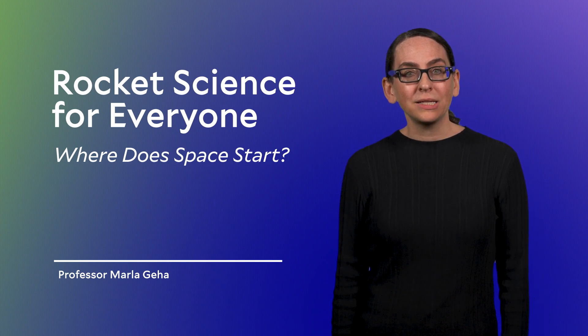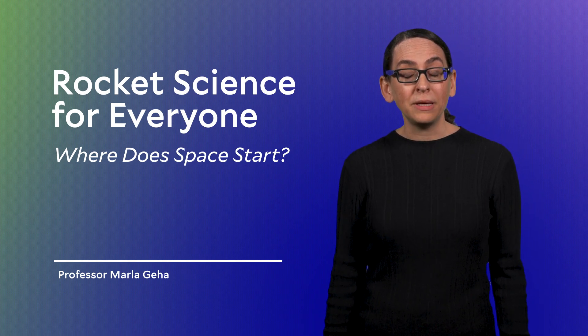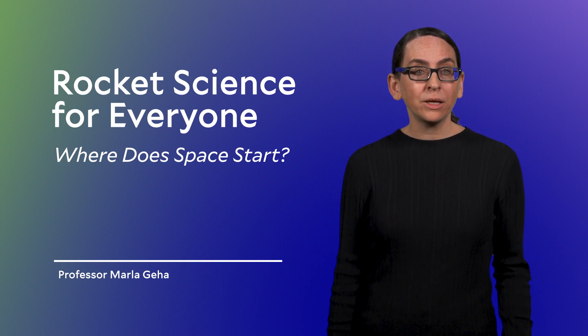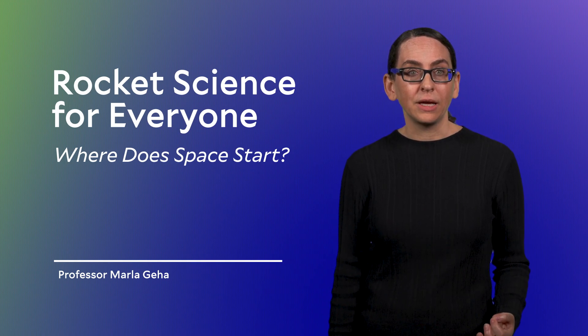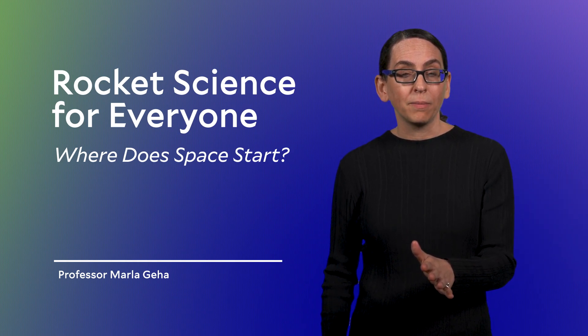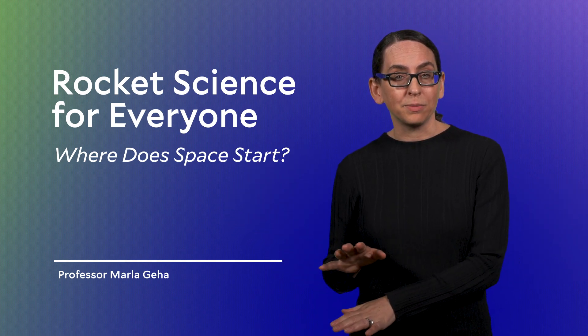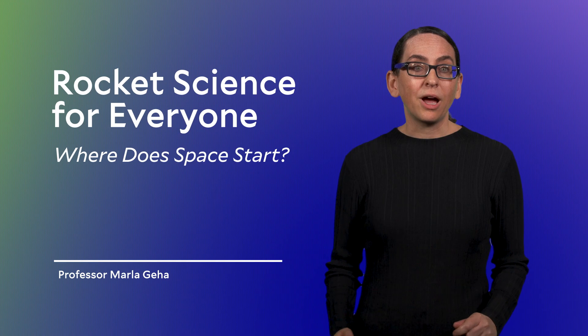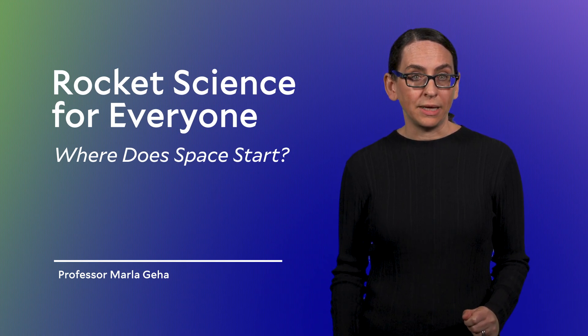Welcome back. In the last segment, we discussed what it means to be in orbit around the Earth, and we made a note that being in orbit is something specific. It is possible to be out in space but not in orbit, but you can't be in orbit and not in space. In this segment, I want to start with defining where space begins.